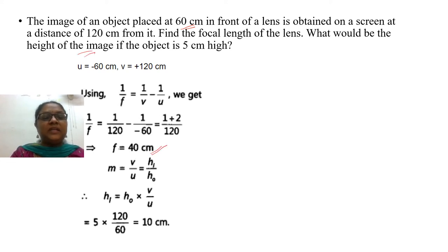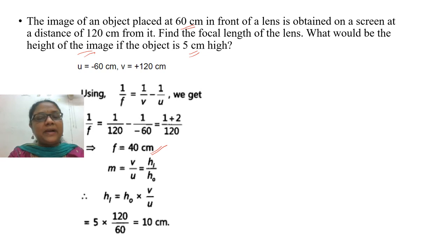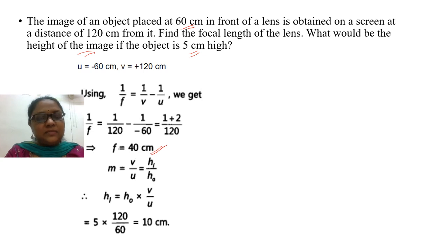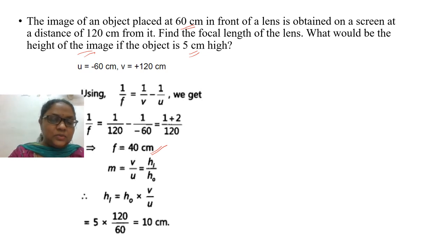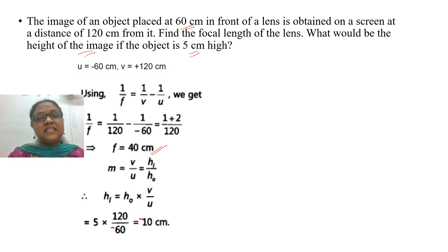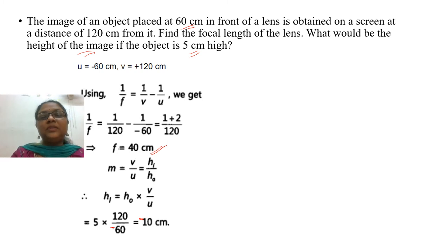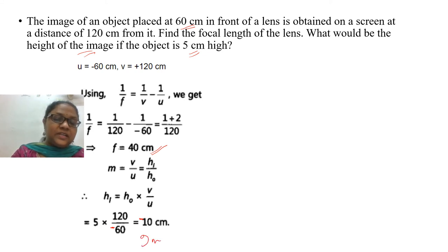What would be the height of the image if the object height is 5 cm? Using magnification: m = V/U = height of image / height of object. Cross multiplying: height of image = height of object × (V/U). V is 120 and U is minus 60, so the height of the image is 5 × (120 / -60) = minus 10 cm. The negative sign indicates the image is real and inverted, formed below the principal axis.